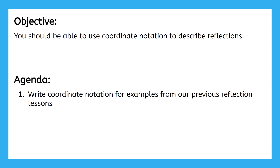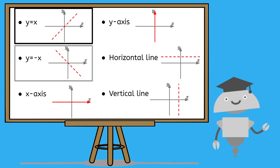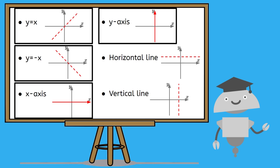First, we'll learn how to write coordinate notation for four examples from our previous reflection lessons, and then we'll complete two additional examples similar to what you'll see in your practice. Remember that in our previous lessons, we learned how to reflect six different ways. In this lesson, we're going to learn how to write notation for four of these. This notation is really helpful because it gives us a short and quick way to describe our transformation to others, and it makes it easy for others to do the same for us.